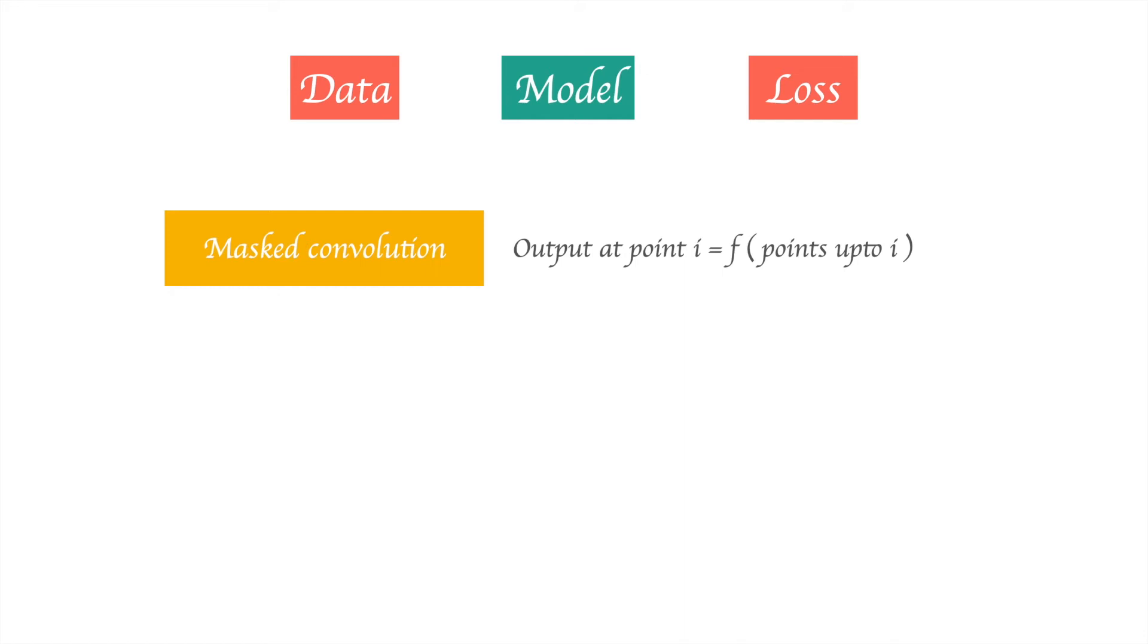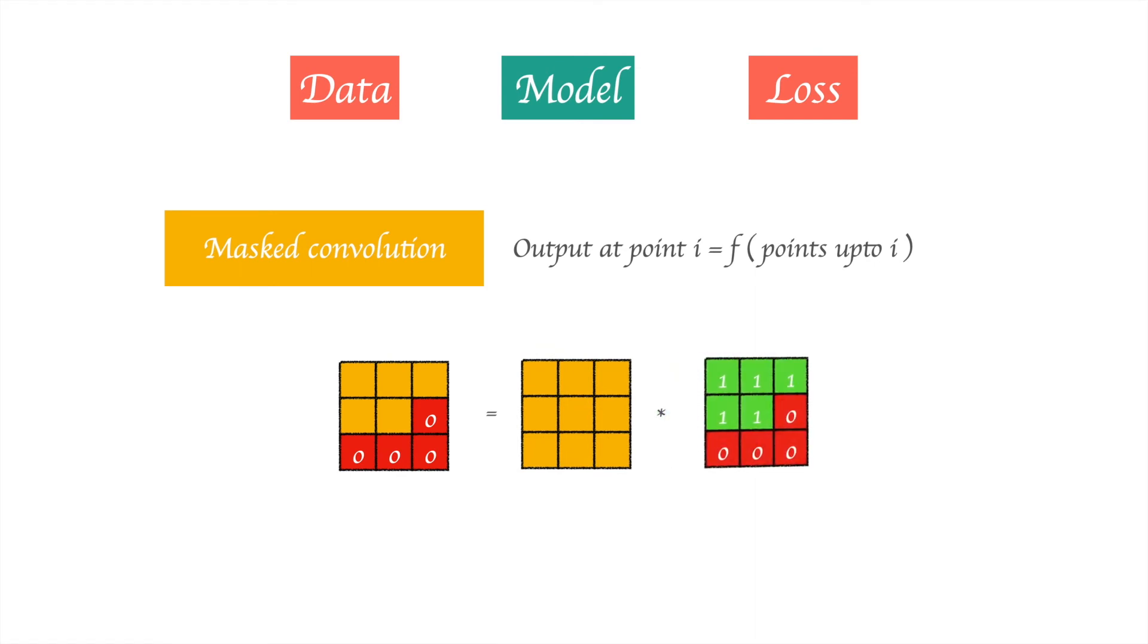We do not want our convolution to see the values after the point i, and that can be implemented by having a kernel whose points after the center pixel are equal to zero. We can get this kernel by having any kernel multiplied by a mask whose values are zero at the points after the center pixel. Let's see how we can implement masked convolution which does this for us.